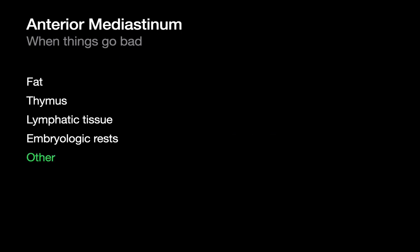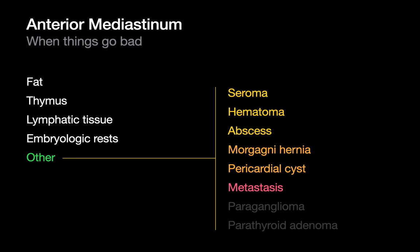There are a number of other things that could create an anterior mediastinal mass that are not derived from the anterior mediastinum itself but reflect a process that affects or involves it — processes like a seroma, a hematoma, or an abscess, a morgagni hernia from the abdomen, a pericardial cyst from the cardiac space, or a metastasis from somewhere else in the body.